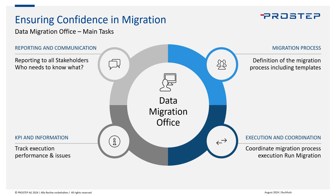On the lower left, you find KPIs and information. We want to track how a currently executing migration performs, take the KPIs, and log any issues. Furthermore, decide where those issues need to be raised. For example, an issue concerning source system data needs to be fixed in the source system and communicated to stakeholders responsible for it. An issue for the target system is forwarded to target system owners. Anything affecting the migration pipeline itself is handled by the pipeline team. Coordinating and reporting on the current status of those issues is one of the main topics for the data migration office.